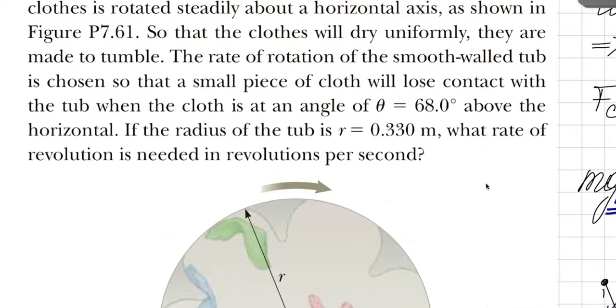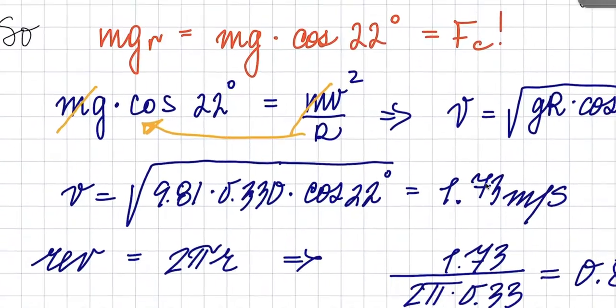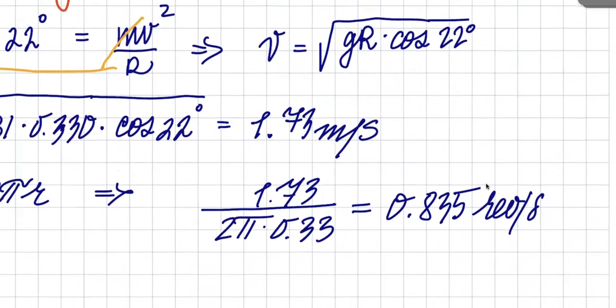However, they want it in revolutions per second, twisted-minded people. So one revolution has the length of 2 pi R, you know how we go from kinematics from linear to radial. They want omega, basically. Well here, you'll just take your meters per second and you will divide it by the length of one rotation in meters, and that will give you revolutions per second.